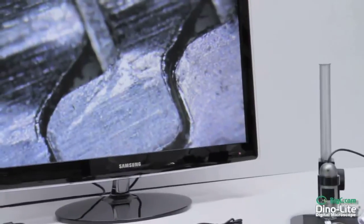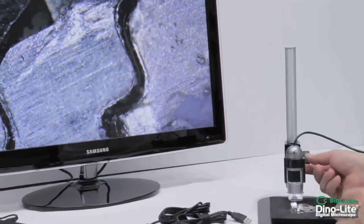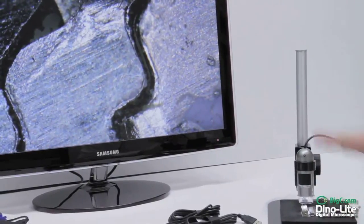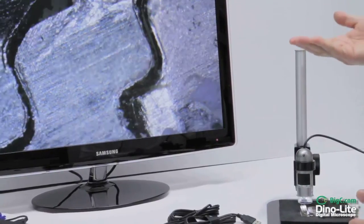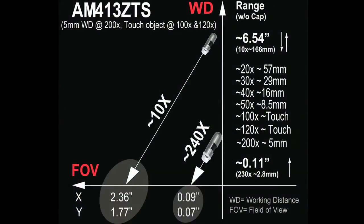When using the MS-35B stand, putting the scope at a lower or shorter working distance, you can achieve higher magnifications: 30, 40, 50, and up to 230 times the magnification.